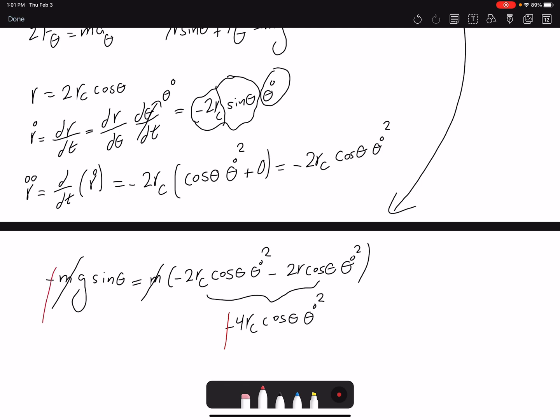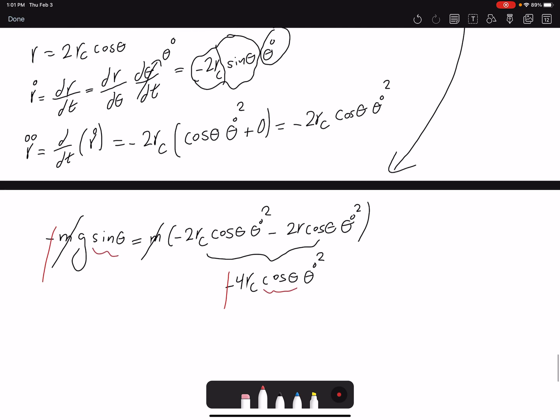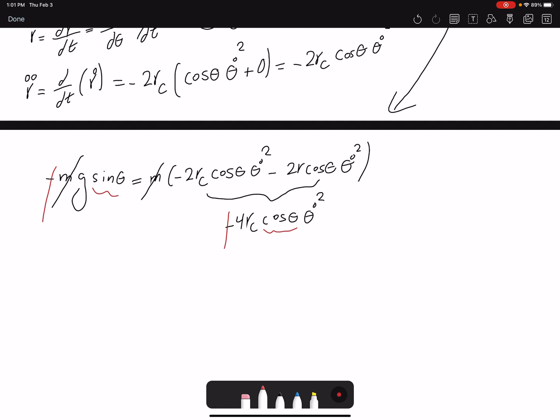And I want to find theta, so I have sine theta here and cosine theta. I'm going to divide both sides by cosine theta, so I get rid of the cosine theta on the right. So that would be tangent theta. And then here would be 4Rc theta dot squared over G.